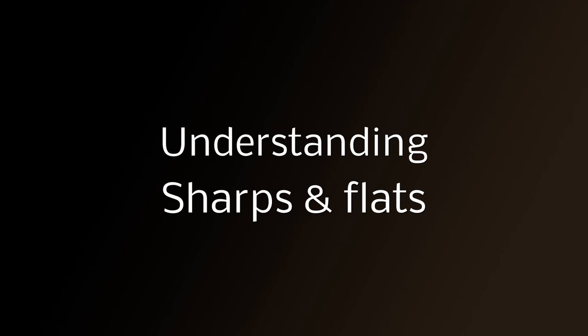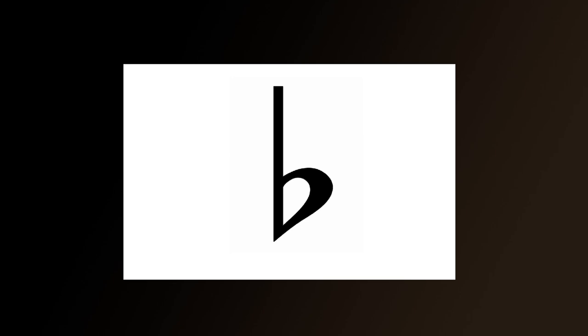Understanding sharps and flats for the guitar. The sharp symbol looks like a hash or a blank game of noughts and crosses, and the flat symbol looks like a small b. In fact, on many websites the small b is used as a flat symbol because they are so similar.